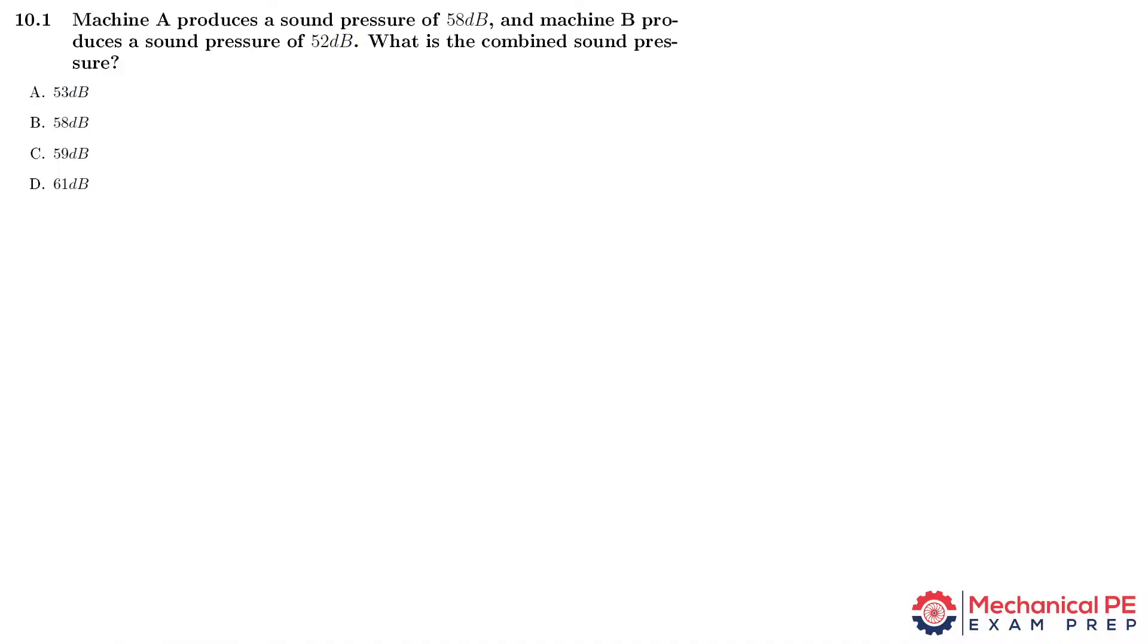Machine A produces a sound pressure of 58 decibels and Machine B produces a sound pressure of 52 decibels. What is the combined sound pressure?